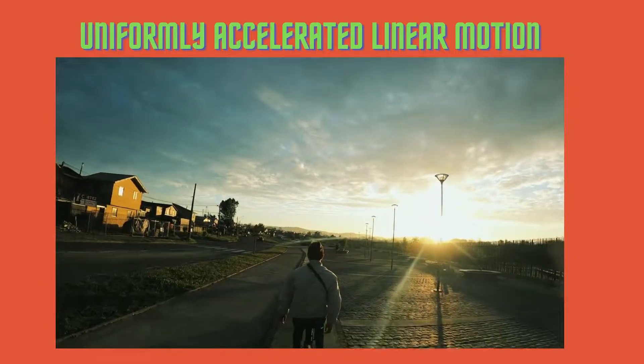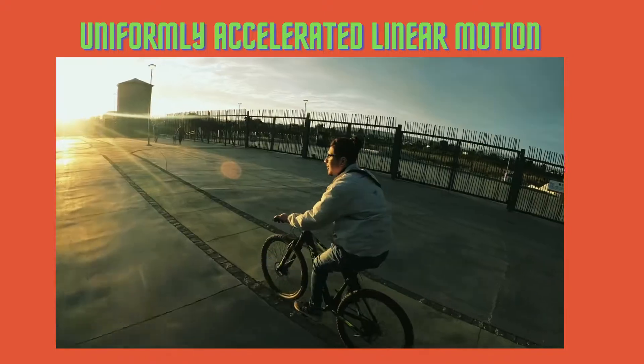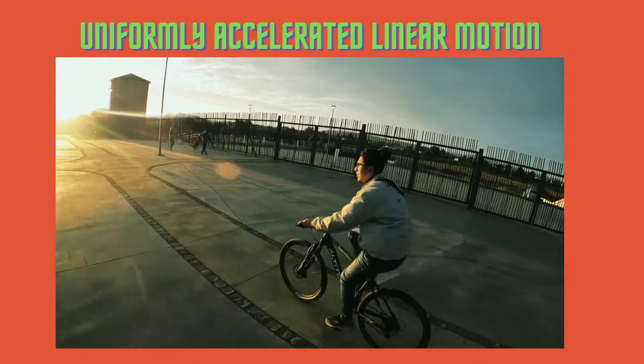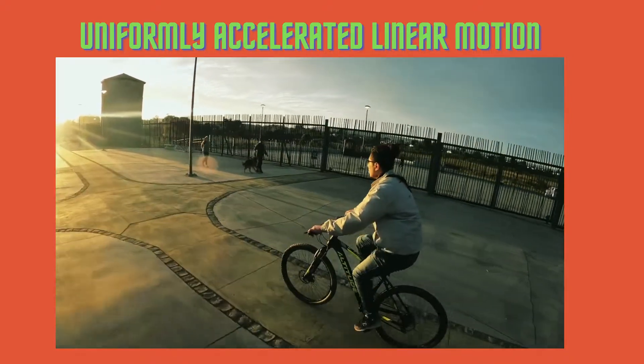In Uniformly Accelerated Motion, the velocity changes at a fixed rate. An example of this is a bike increasing its velocity by 5 meters per second every second.